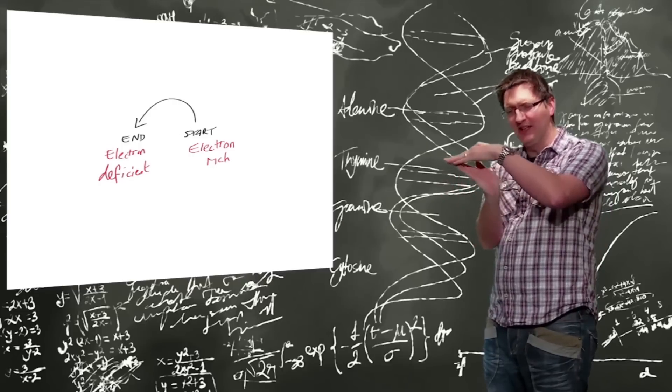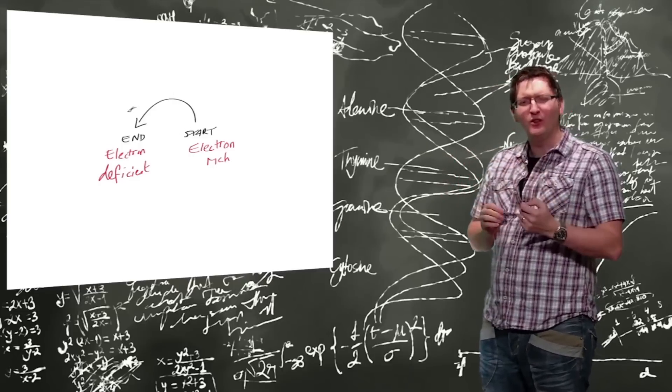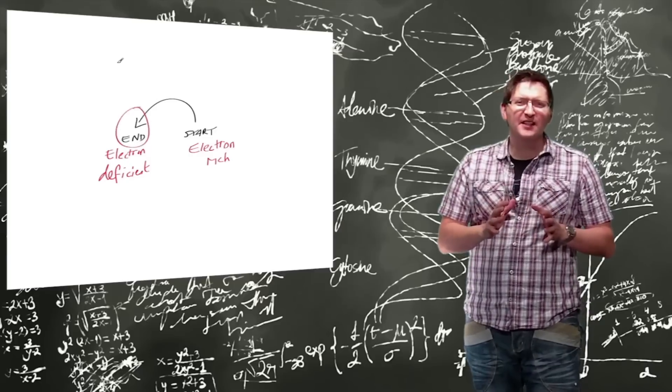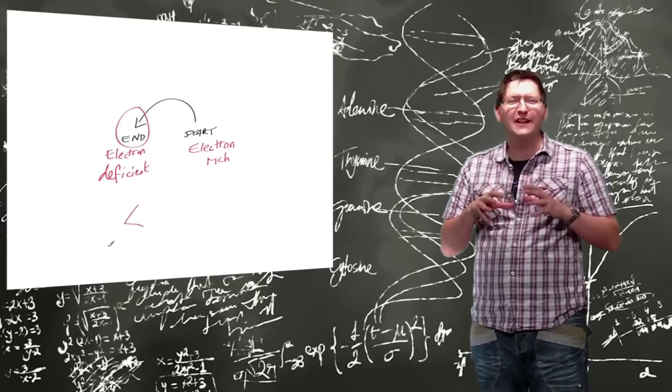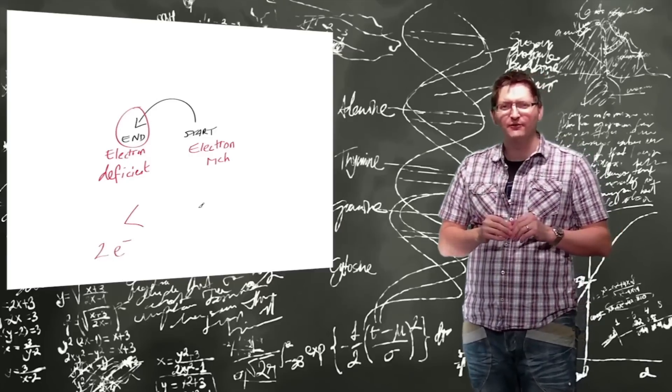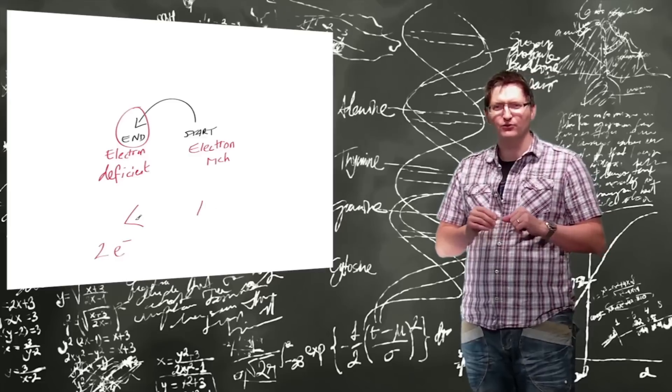If it had one arrow head, then it would mean one electron is traveling. This is the kind of reaction mechanism arrow or curly arrow that you see in free radical reactions, and we'll cover them later on.